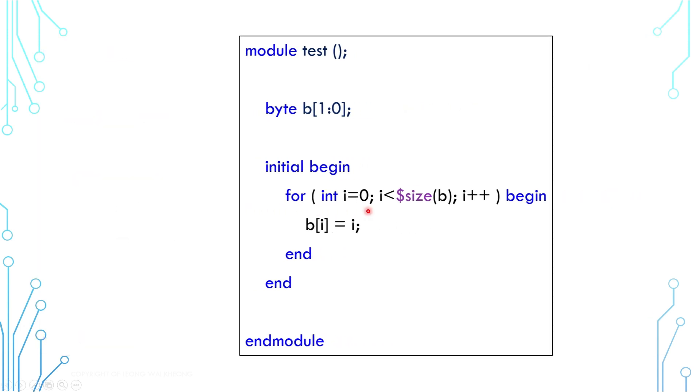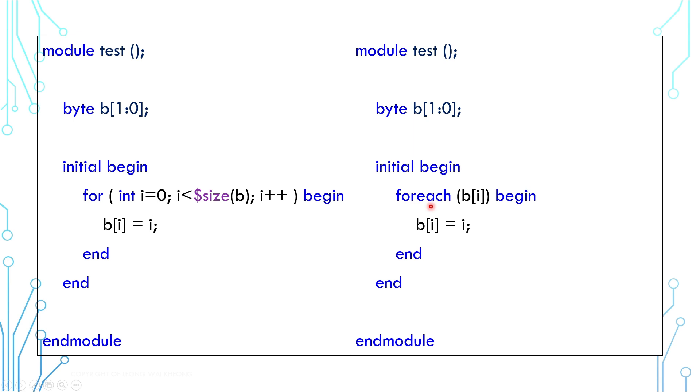Now, there is a new syntax in SystemVerilog called foreach. If you are familiar with programming, you would have known this. Anyway, the code on the left has an explicitly declared counter i, and you need to specify how to count, such as the end condition and the increment method. With foreach loop, it is simpler because the counter is implicit, and the loop will simply go through all elements one by one.